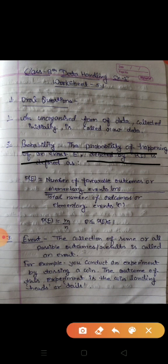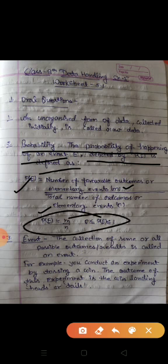It is defined as probability is number of favorable outcomes or elementary events m upon total number of outcomes or elementary events n. So it is the formula P(E) equals m upon n.